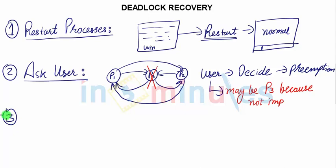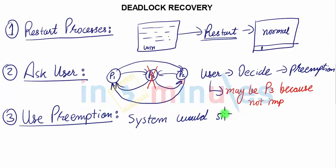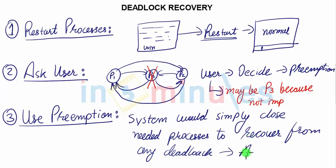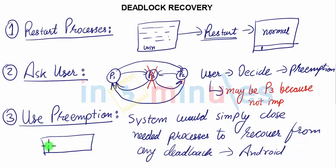The third technique for recovery from deadlock is 'Use Permission.' This simply means the system automatically closes the needed processes to recover from a deadlock. This is generally seen with Android phones — when you start an application and it doesn't work, after a certain amount of time it gives you a warning message asking what it should do: whether it should close, whether it should wait, or whether it should report the issue. This is that mechanism.